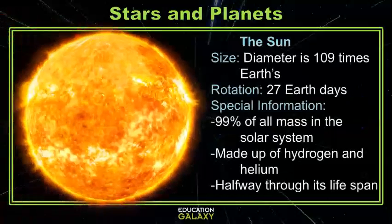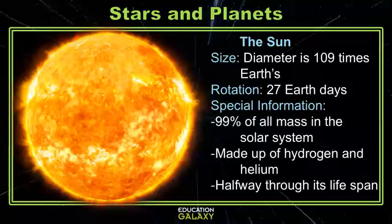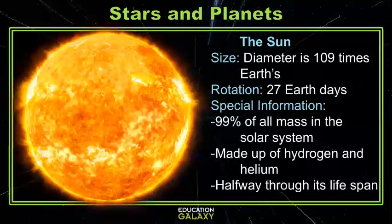Let's take a look at our sun. The sun is huge. It's 109 times the diameter of the Earth. It's the closest star to our planet, and that's why it looks the largest. It's made up of hydrogen and helium. Let's take a look at our planets.